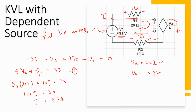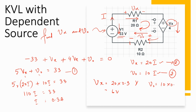Now that we know i, we substitute back into equations 2 and 3. Vx equals 20 times 0.3, which is 6 volts, and V0 equals 10 times 0.3, which is 3 volts. We have now successfully simplified the circuit with a dependent source using the KVL concept.